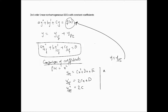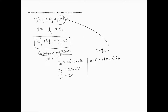Substituting gives: a·(2C) + b·(2Cx + D) + c·(Cx² + Dx + E) = x². Comparing coefficients of the x² term on both sides, the only x² term on the left is c·C, which must equal 1. This implies capital C = 1/c, where small a, b, and c are known constants in the original equation.